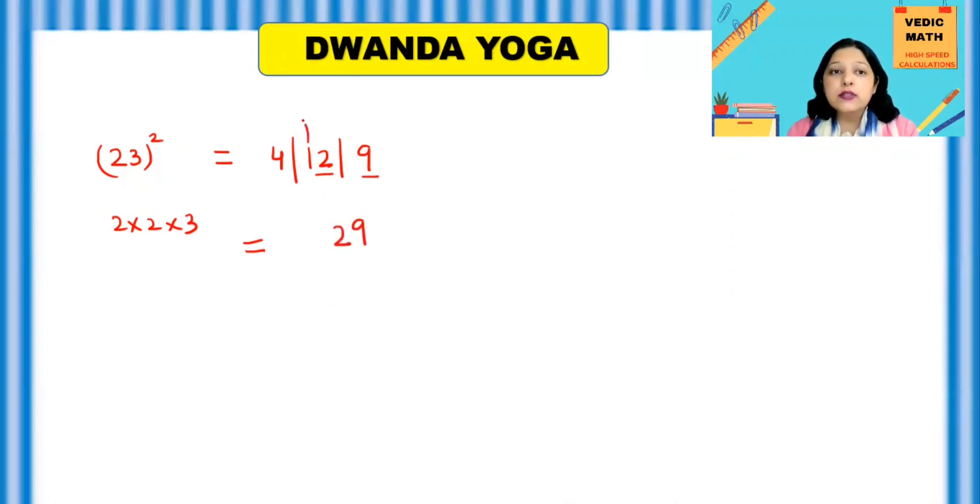This 1 is extra. So shift to the left side and add there. So 4 plus 1 will be 5. So our answer is 529.